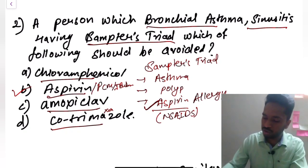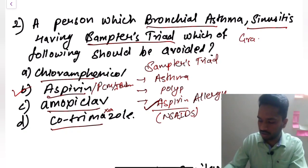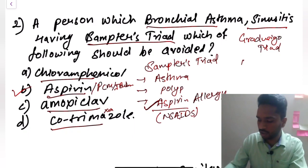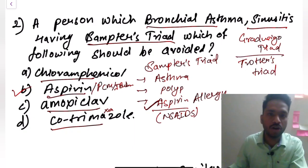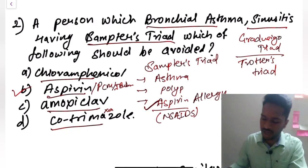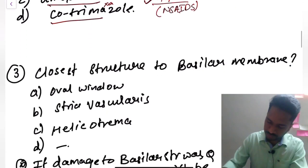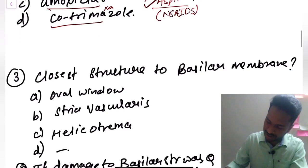You should also remember Gradenego's triad and Trotter's triad, which is seen in NPC. Know all triads in ENT for the upcoming exam. The answer for NEET PG was aspirin.